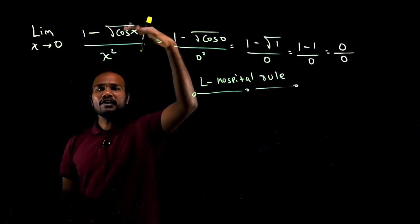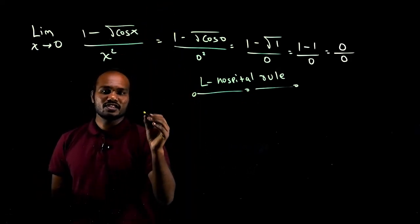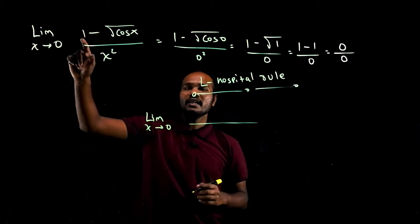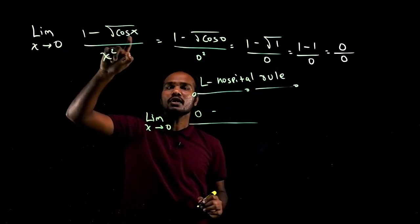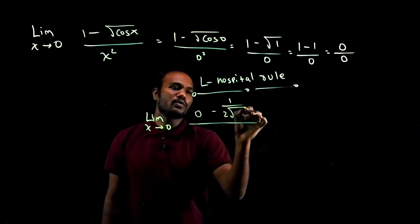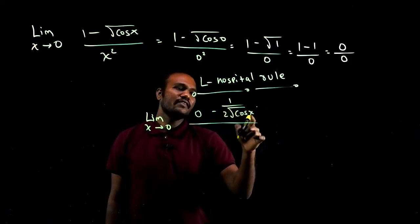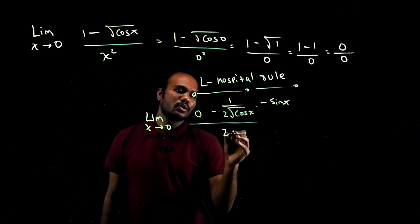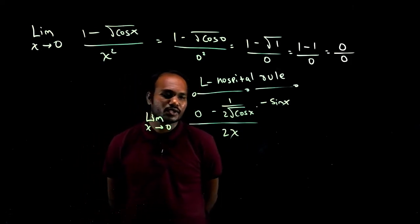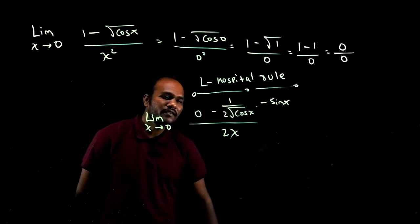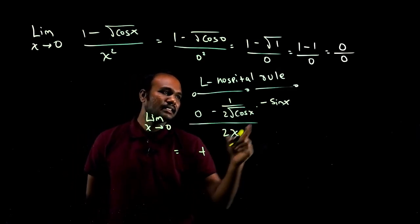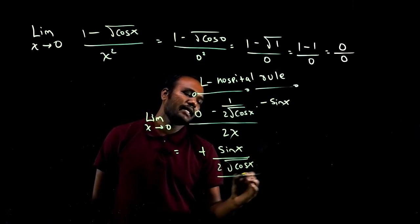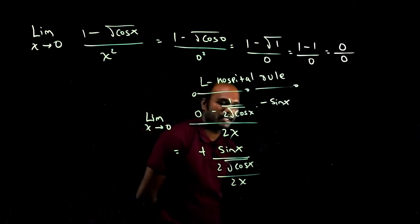So we apply L'Hôpital's rule: differentiate numerator and denominator separately. Limit x tends to 0. Numerator: derivative of 1 is 0, minus derivative of √cos x, which is (1 / 2√cos x) times (−sin x). Denominator: derivative of x² is 2x. So we get sin x divided by 2√cos x, all divided by 2x.